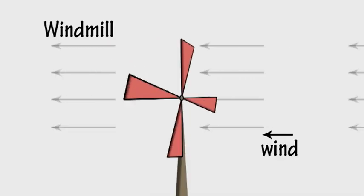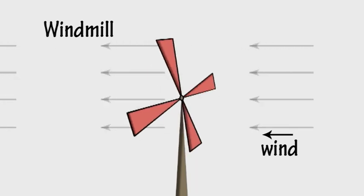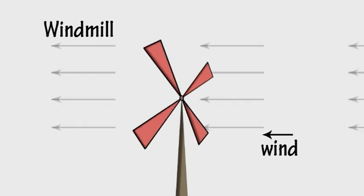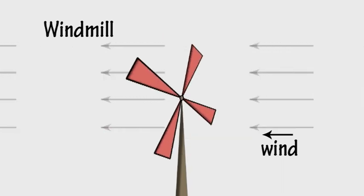The wind also can make the blades of a windmill spin. In this case, moving air pushes against the angled blades of the windmill and sets them spinning.